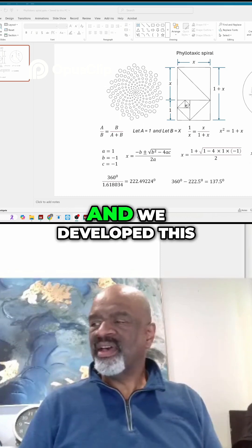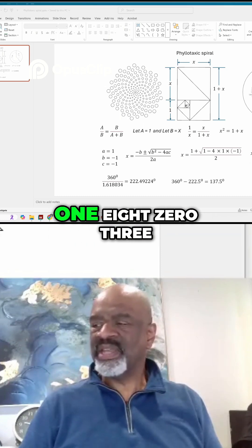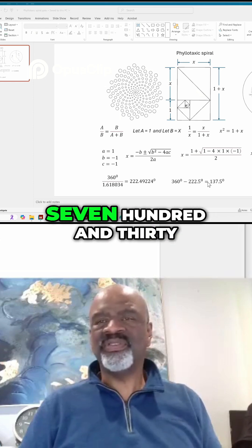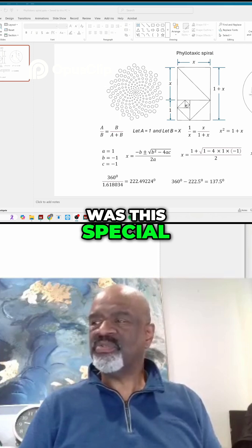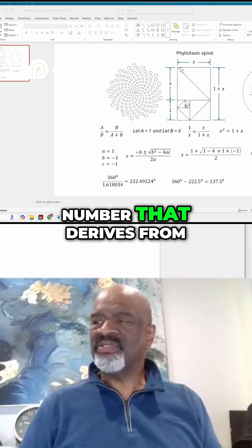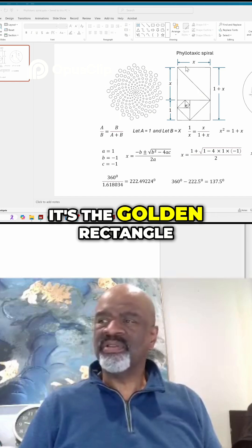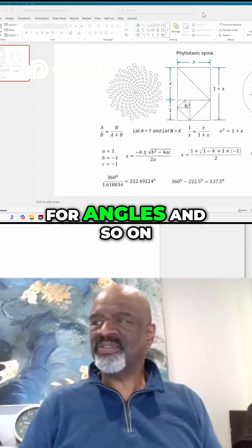some of the math - we developed this number 1.618034, and we also saw that 137.5 degrees was this special number that derives from this math. It's the golden rectangle, the golden ratio for angles, and so on.